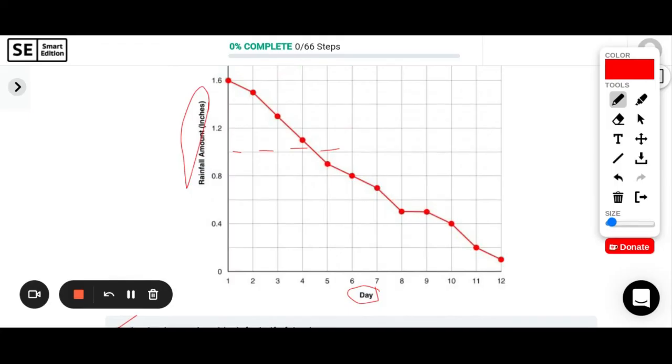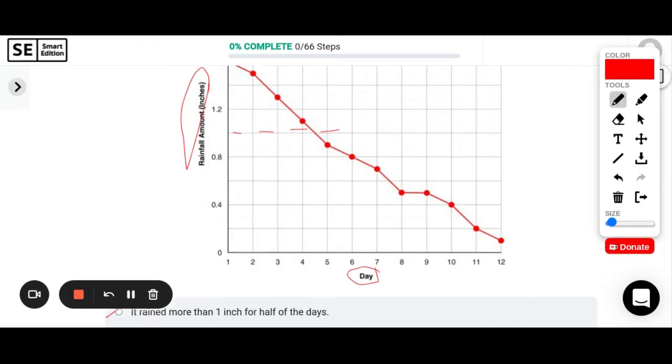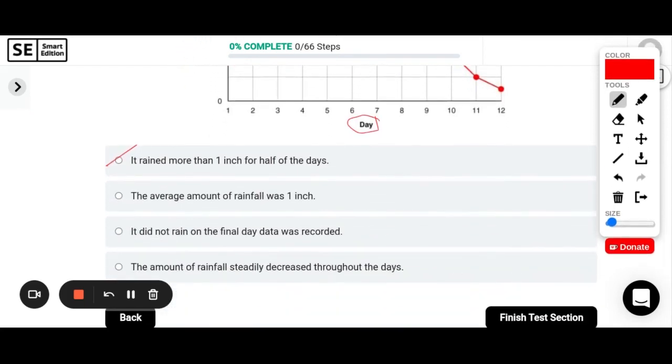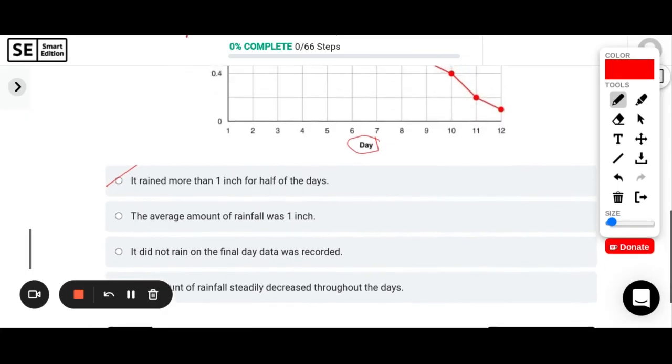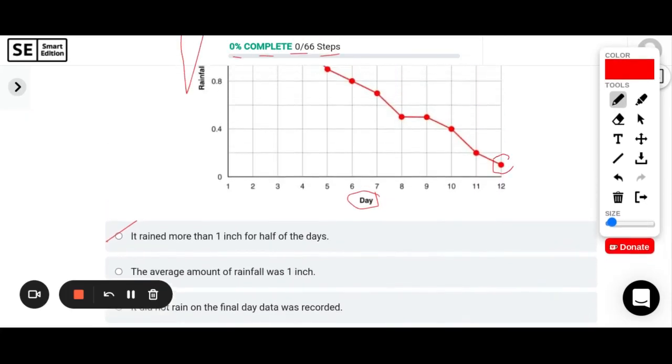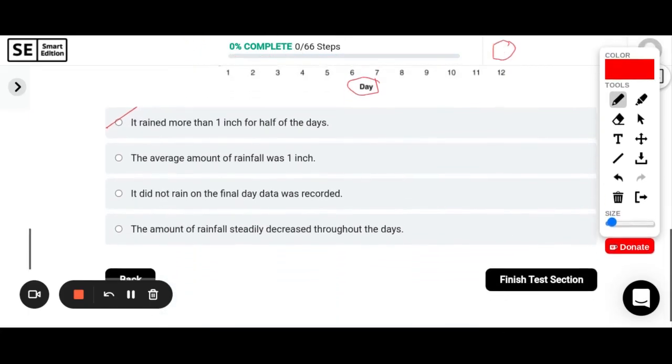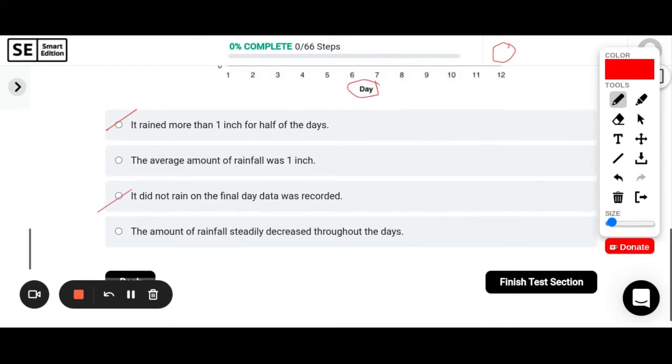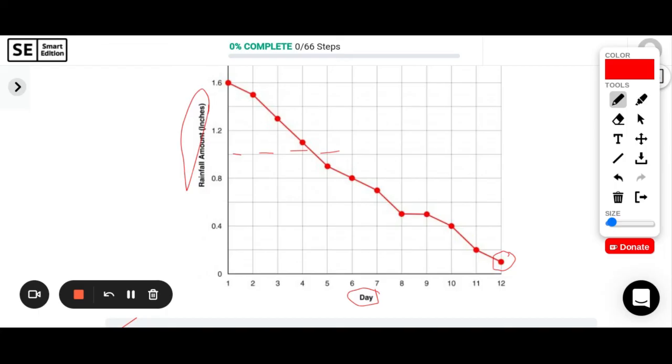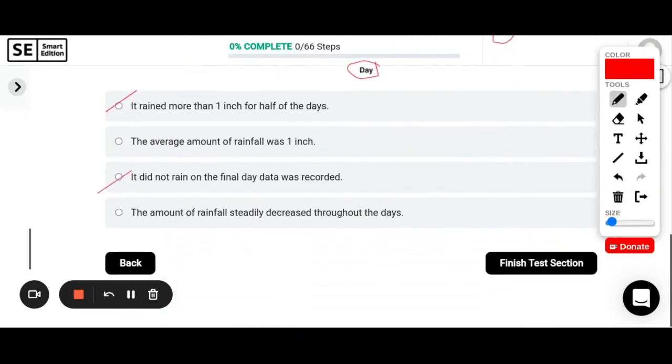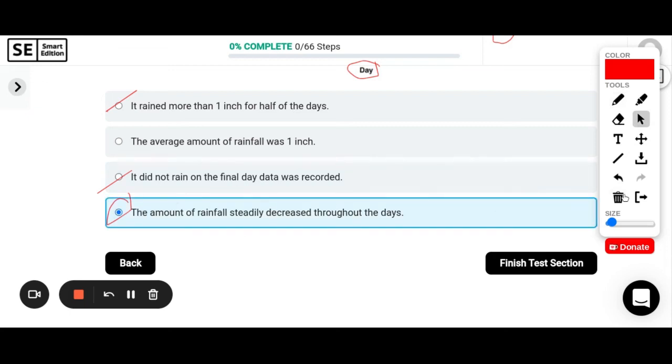The average amount of rainfall was one inch. Makes me think that that is not really reasonable because we had so many days below one inch, but I don't really want to take the time to go and find it quite yet. Let's see what our other options are. We'll hold on to that. We'll come back to it. It did not rain on the final day data was recorded. Well, that's right here, day 12. And it looks like it did rain. Maybe just 0.1 inches, one-tenth of an inch, but still rain. And then last but not least, the amount of rainfall steadily decreased throughout the days. So if I look at this, that looks reasonable because it's going down pretty steadily, right? So if I go back to my options, this one definitely seems like the best option. So I'm going to choose the amount of rainfall steadily decreased.